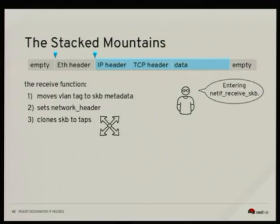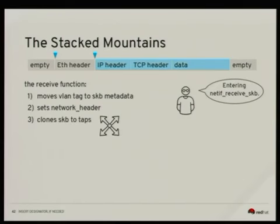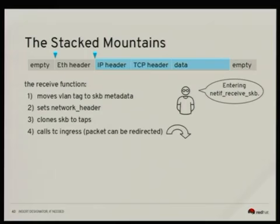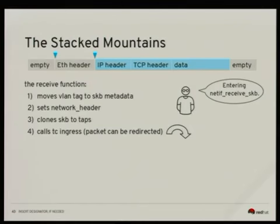Next, we clone the SK-buff and send it to so-called TAPs. A TAP is a special attachment to the kernel able to read any received packet — this is what tcpdump or Wireshark uses. It taps in very early in the pipeline. With the original packet, we then call TC ingress. The TC tool can modify packets, steal them, or relay them elsewhere. This is also very early in the pipeline. If the packet is stolen by TC, processing ends and it can be directed to a different interface.